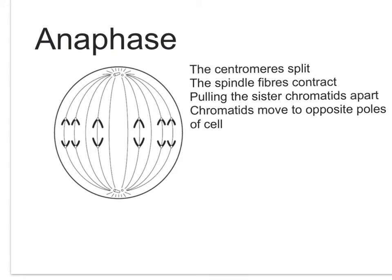In anaphase, the centromere is now split and the spindle fibres contract. This pulls the sister chromatids apart and the chromatids, which are now known as chromosomes, move to opposite poles of the cell.